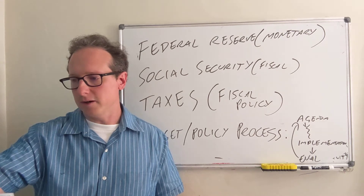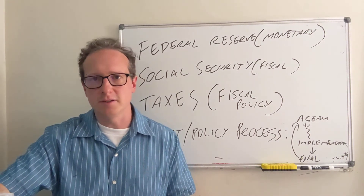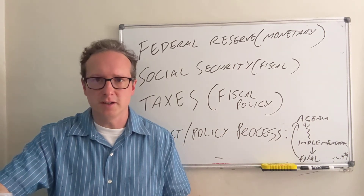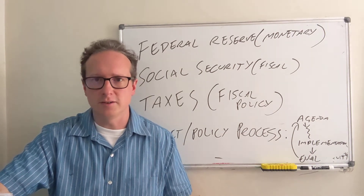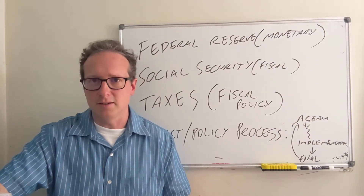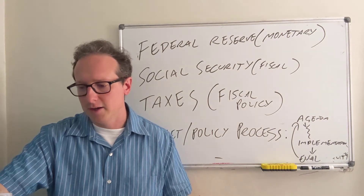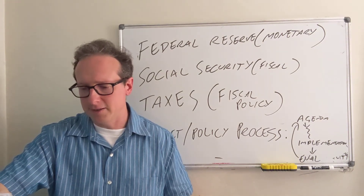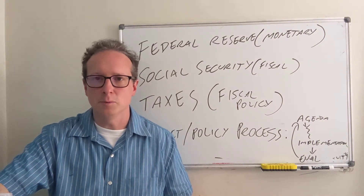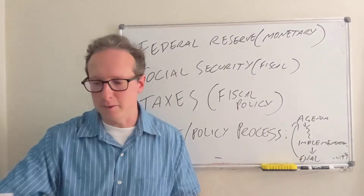Now let's talk about two other very large programs in addition to Social Security. Out of that $6 trillion budget, around 20% is Social Security, but another 20% to 30% is health care spending — that's Medicare and Medicaid combined. Let's talk about both and make sure we keep them straight, because a lot of people can never seem to keep straight what's Medicare and what's Medicaid.